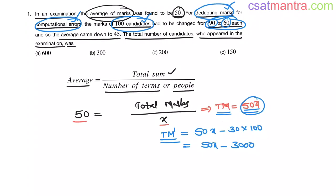Now the new average is 45. Because of deducting marks, the average came down to 45. So new average is 45. New total is 50x minus 3000.